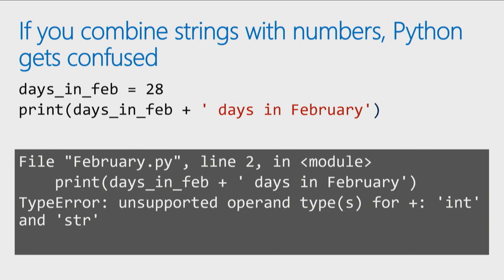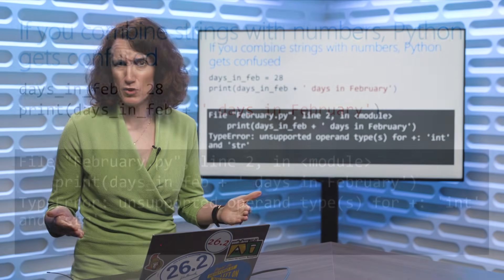Well, if you actually look at the error message, it'll give you a hint, unsupported operand type for plus int and string. What it's telling you is it's actually the plus symbol that's confused. Five plus six, it knows a number plus a number, I should be doing addition.